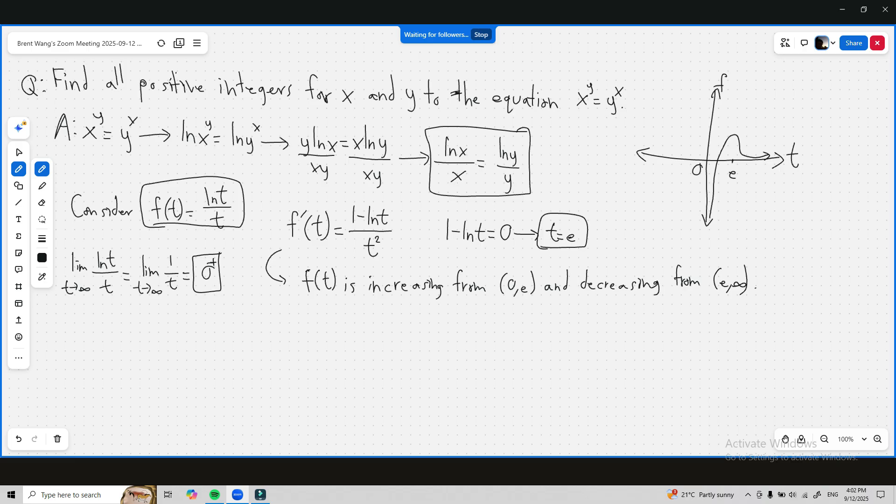This is going to be important later on. So now we know that, let's just try plugging in some values of f of t to see what f of t equals. So f of 1 is equal to ln 1 over 1 which is equal to 0.